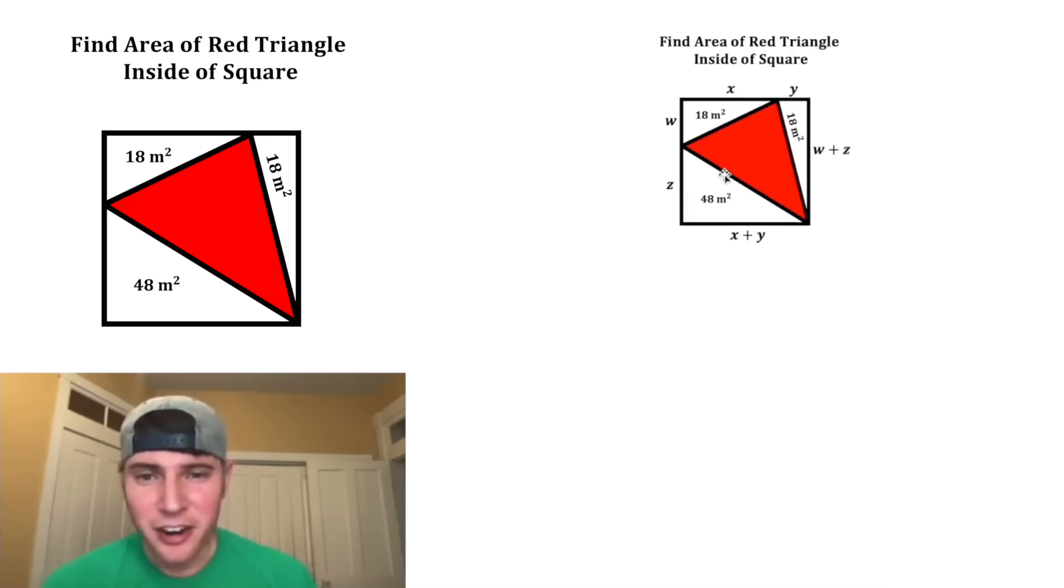So now we have to make some equations. The area of this triangle is going to be one half base times height, so the base of x plus y times the height of z divided by 2 equals 48. Next, let's do this triangle: the base of w plus z times the height of y divided by 2 equals the area of 18.